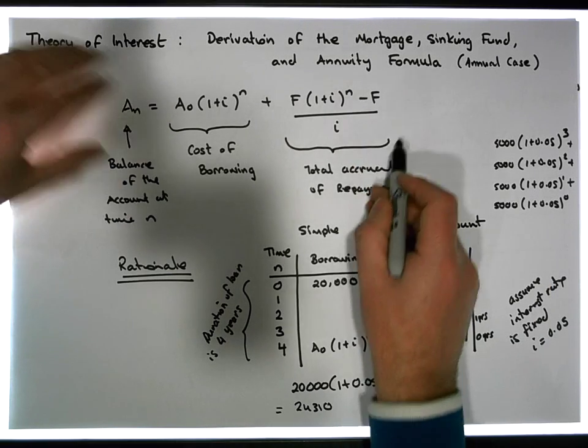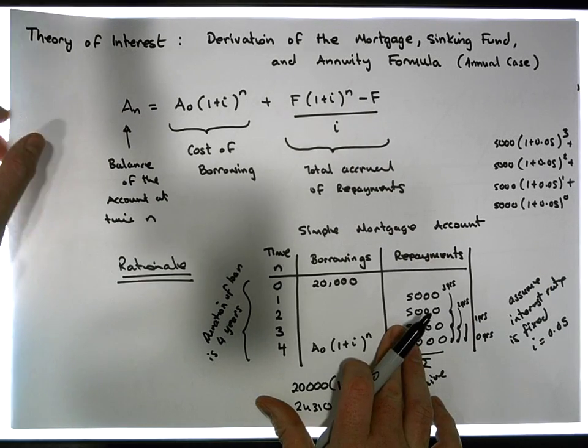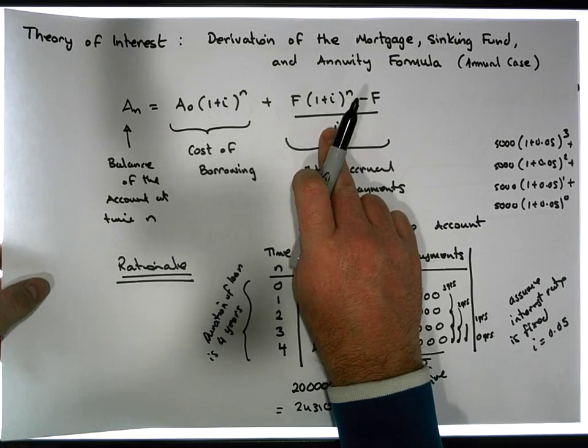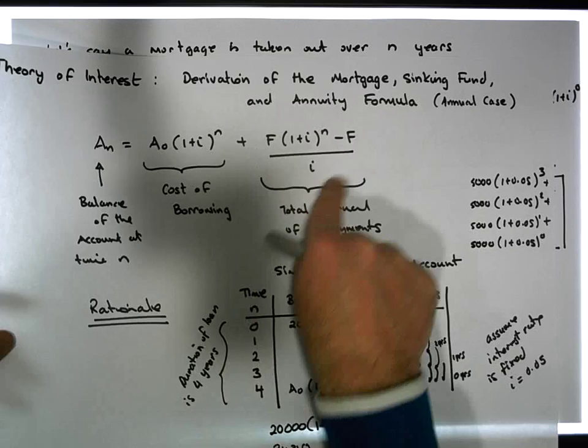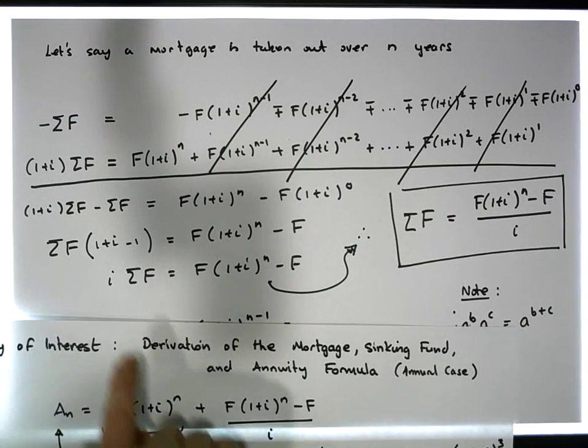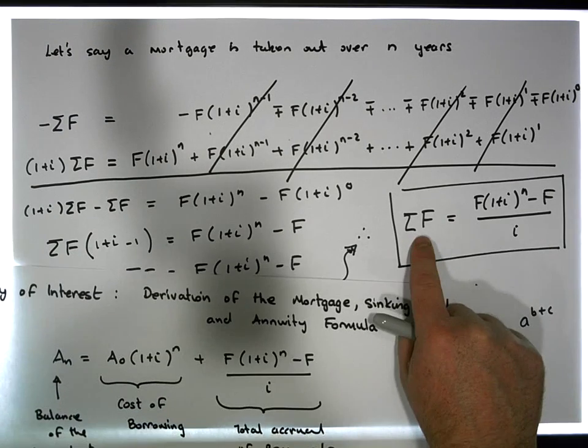This formula here is a sum, it's a sum of a number of finite terms. So this particular formula here represents it's the sum of all of these particular accruals.